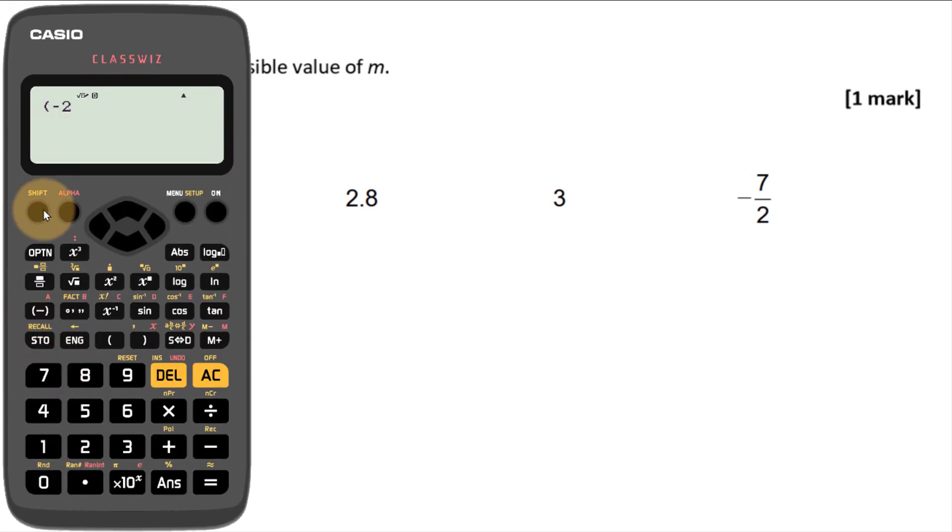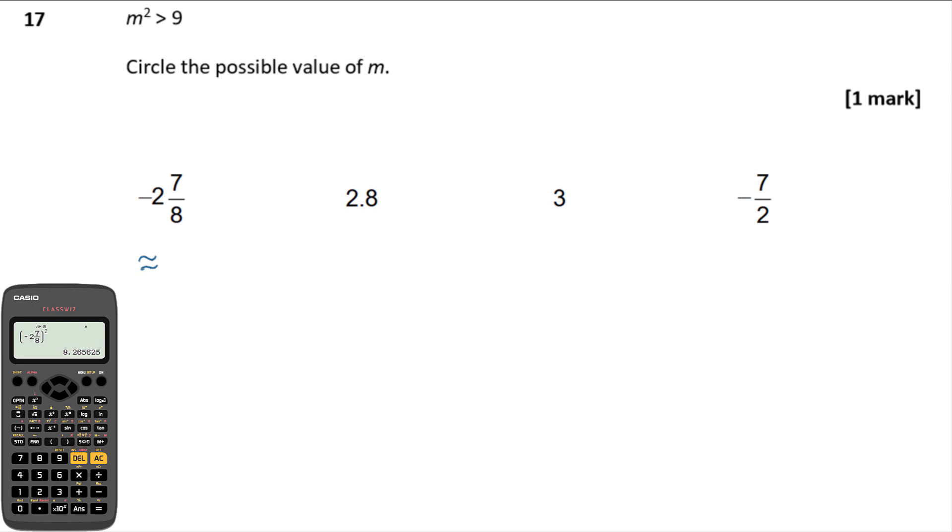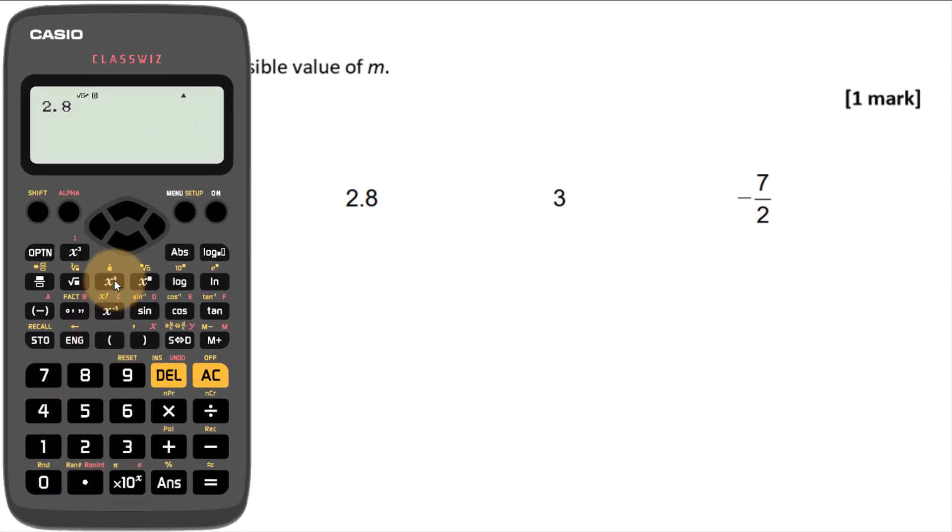So if I've got 2.78 and I square that, just tap it into the calculator using the square button, that comes out to be 8.265 and change, roughly 8.27. It's just too small, that's not bigger than 9. 2.8 I already know is not bigger than 9. Similarly 3 squared is 9, and 9 is not bigger than 9. The only one that can be bigger than 9 is that one at the end.